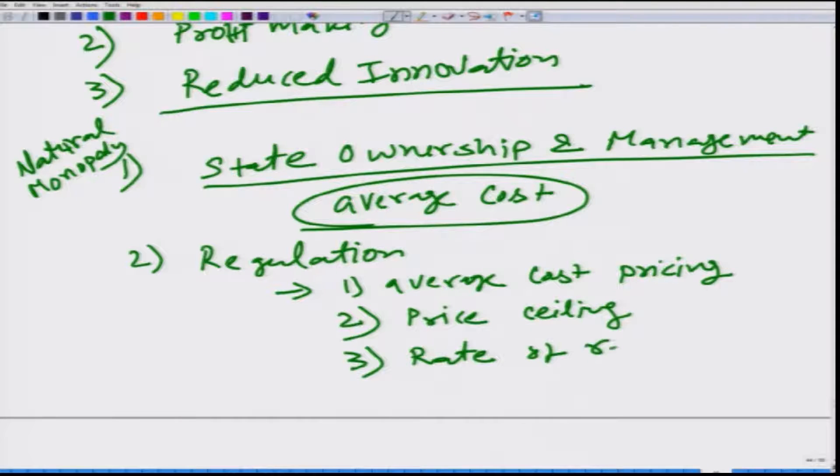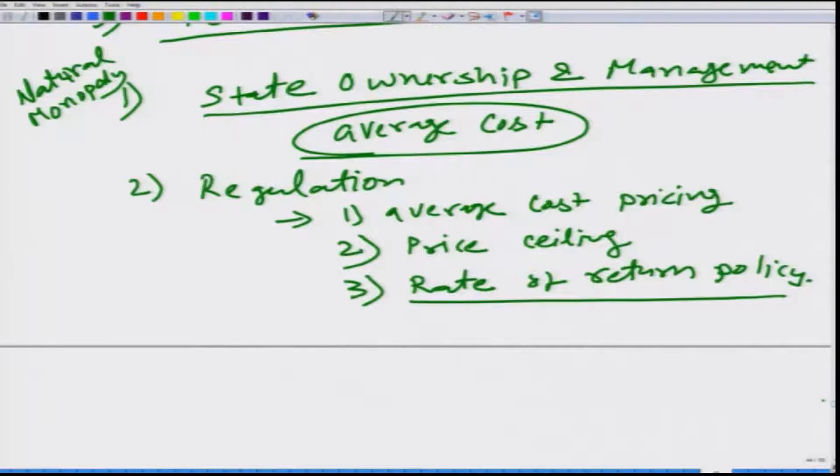What happens is that the Monopoly is allowed to earn whatever is the interest rate prevailing in the market plus a markup. This is called rate of return policy, and of course the Monopoly has to get it approved from the government to have that particular price.